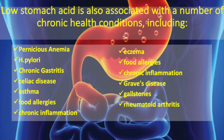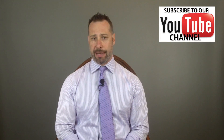Left untreated, low stomach acid can actually damage the gastrointestinal tract. Low stomach acid is also associated with a number of chronic health conditions, including pernicious anemia, H. pylori, chronic gastritis, celiac disease, asthma, food allergies, chronic inflammation, skin conditions like eczema and dermatitis, thyroid problems, rheumatoid arthritis, and the list goes on. So if you have any of these conditions, be aware that you're at increased risk of not having enough stomach acid.